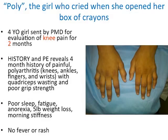I want to talk about juvenile idiopathic arthritis today. I want to tell you about the next subtype — and the name 'poly' is actually stolen from one pediatric rheumatologist, but I like the name. This is literally about a mom who told me that her daughter cried when she opened up a box of crayons.